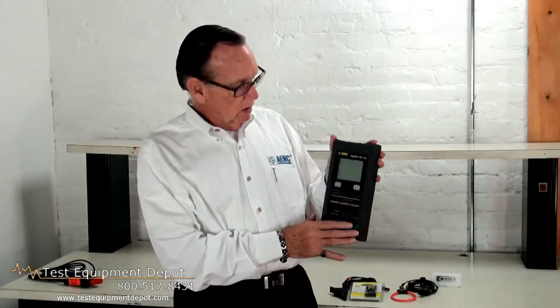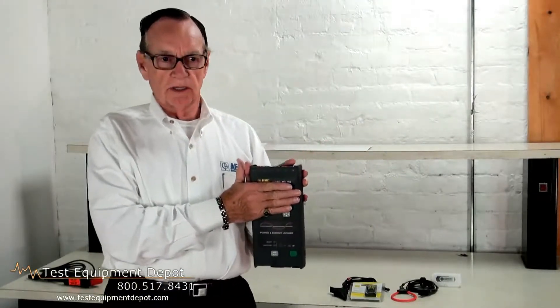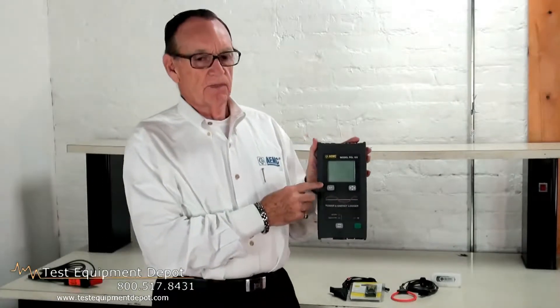There are two models. One is the PEL 102, which has no display, and the PEL 103 has a display. It offers all the essential functions for logging power.